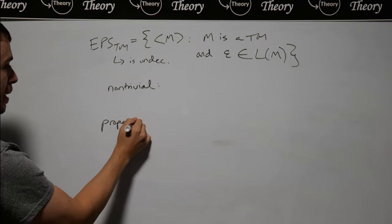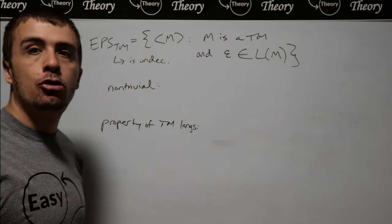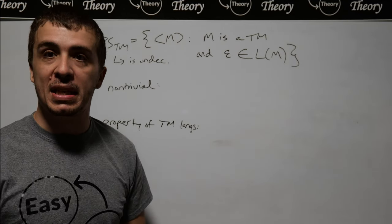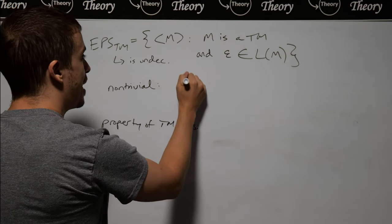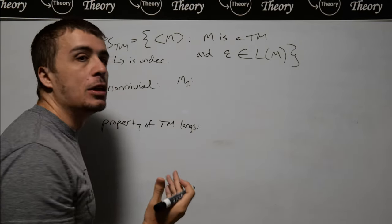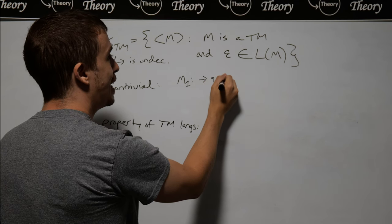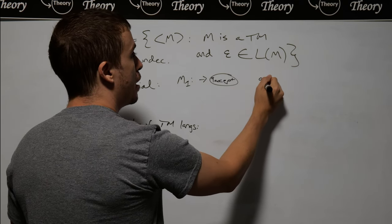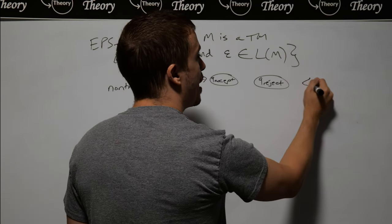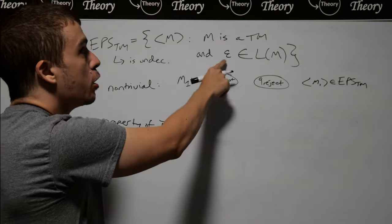I'll break this up into two steps. To show that it's non-trivial, we need to show a Turing machine that's in EPSTM and another that is not. I need to find M1 such that M1 accepts the empty string. One easy thing is to accept every string, including the empty string. I can have a Turing machine with the accept state as the start state — it will stop immediately and accept. So M1 is in EPSTM because it accepts every string, including the empty string.